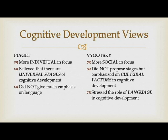Because this is in relation to cognitive development, let's compare the cognitive development views of two experts: Piaget and Vygotsky. Piaget's view is more individual in focus — development depends on the learner. While Vygotsky's is social in focus, because development is based from social interaction. Piaget believed there are universal stages of cognitive development with uniform progress at certain ages. Vygotsky did not propose stages, but emphasized cultural factors in cognitive development. That's why Vygotsky stresses the role of language in cognitive development, while Piaget did not give much emphasis on language.